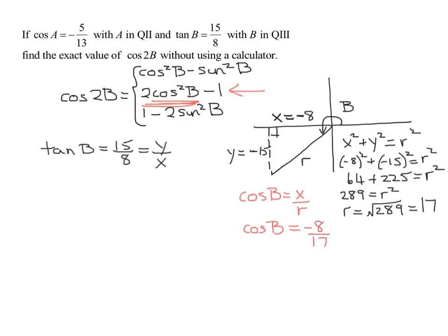And so now I know this, I can plug it into this formula here. So I know the cosine of 2B is 2 times cosine squared B minus 1. So that's going to be 2 over 1 times the cosine of B is negative 8 over 17. So I'm going to have to square it minus 1.